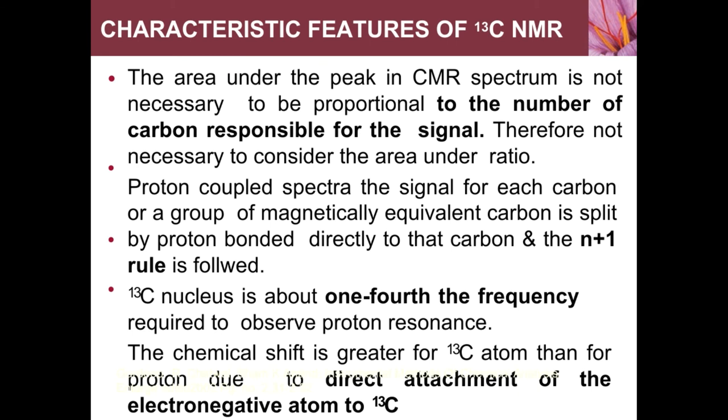Characteristic features of C13 NMR: the area under the peak of a C13 spectrum is not necessarily proportional to the number of carbons responsible for that signal, so area is not considered in CMR. In proton-coupled spectra, the signal of each carbon or group of magnetically equivalent carbons is split by protons bonded directly to that carbon, as per the n+1 rule. The C13 nucleus requires about one-fourth the frequency needed to observe proton resonance. The chemical shift is greater for C13 than for the proton due to direct attachment of the halogen atom to the C13 carbon.